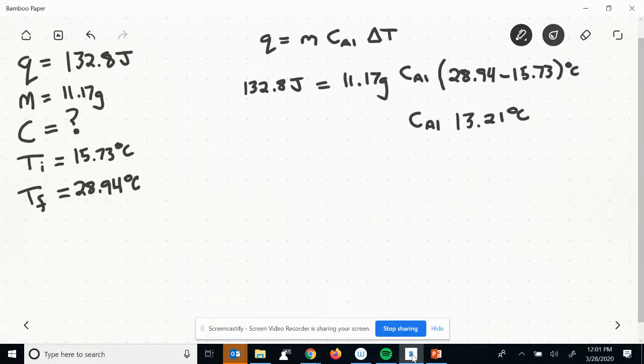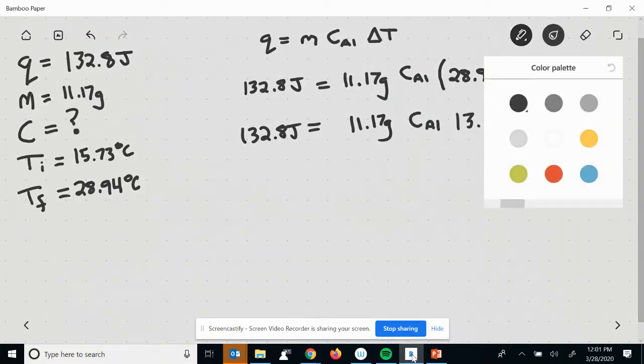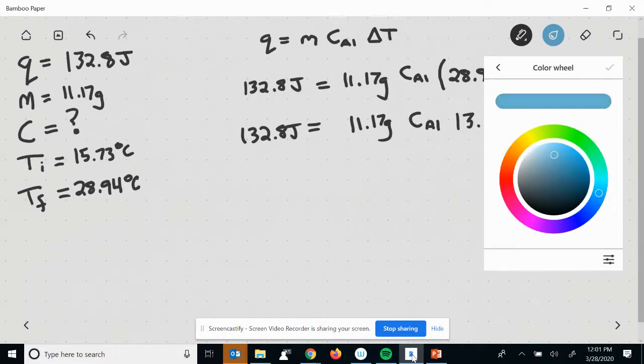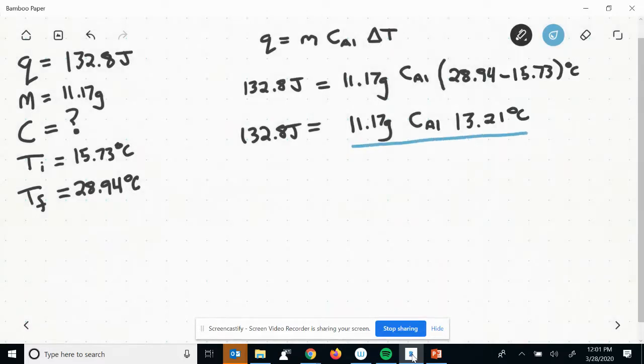Still haven't found our specific heat. That's the goal of the problem. Mass stays the same as does our energy. The truth is I just want to isolate that specific heat. And so in my next step, all I'm going to do is come through and I am going to divide this right side by 11.17 grams.